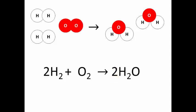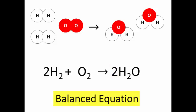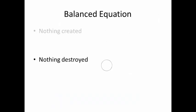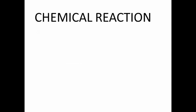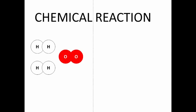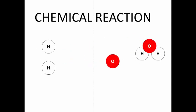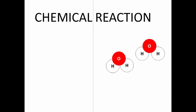So the whole equation is 2H2 plus O2 gives 2H2O. This is a balanced equation. What does that mean? It means that nothing gets created or destroyed in the process. In any chemical reaction, we start off with some chemicals, and then they react with one another to become other chemicals.